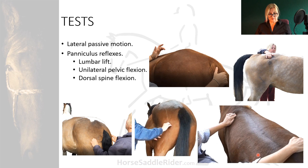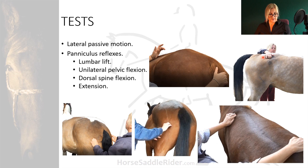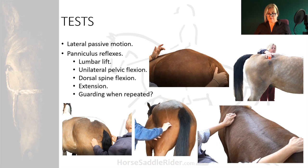Spinal extension can be tested by scratching just above each tuber coxae simultaneously, and this can indicate sciatic signs if the horse blocks this movement. Repeat all tests twice, as the horse may guard a region the second time if it is uncomfortable to flex or extend.